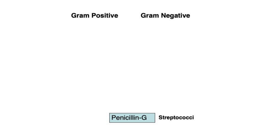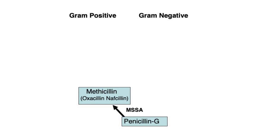Let's first look at the penicillin ladder. Penicillin G was the first penicillin to be discovered, and today this antibiotic is primarily used to treat syphilis. It also effectively covers streptococci and anaerobic mouth flora. Because Staph aureus quickly became resistant to penicillin, nafcillin and oxacillin were developed. These agents cannot be broken down by Staph's beta-lactamase.